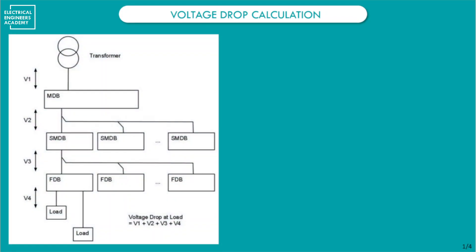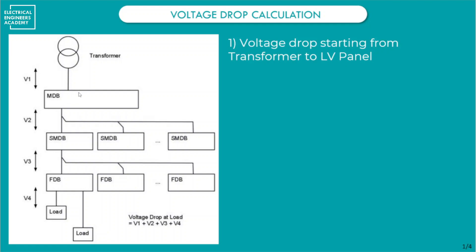To understand this four percent limitation properly, let's look at a typical power distribution scheme. We have the transformer supplying the MDB, then several SMDBs feeding final DBs, and finally the loads such as sockets, equipment, and light fittings. That four percent is measured from the transformer's low-voltage side all the way to the final load. V1 represents the voltage drop from the transformer to the LV panel — usually a short distance of 15 to 20 meters.